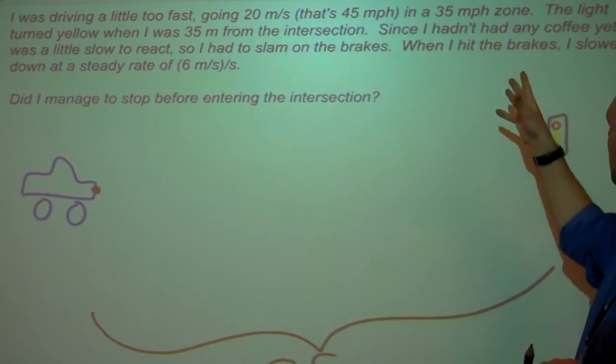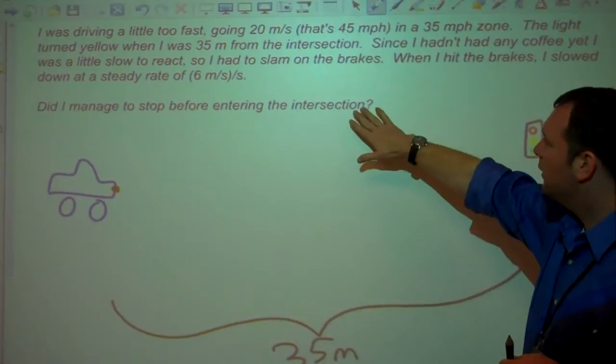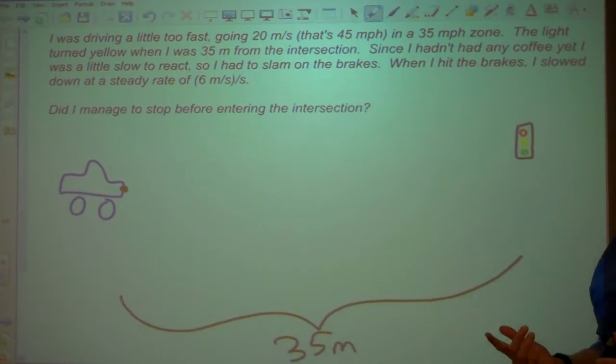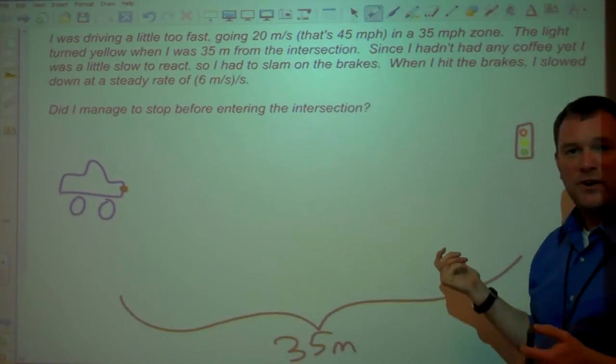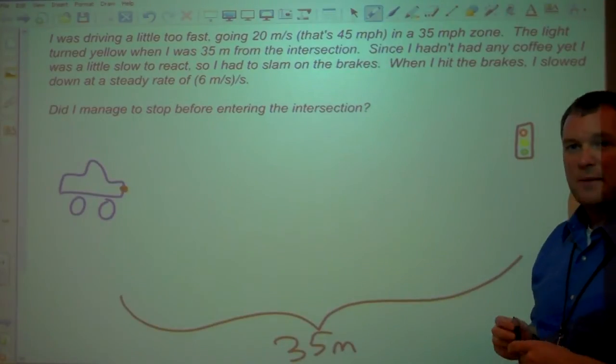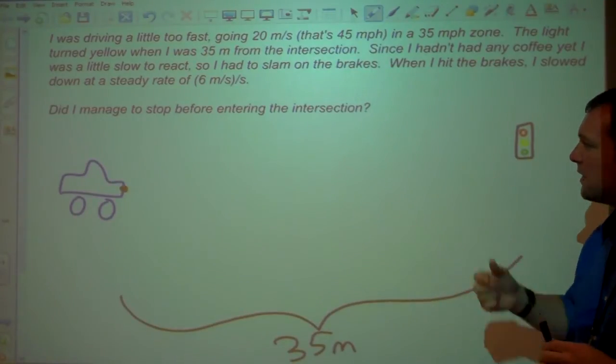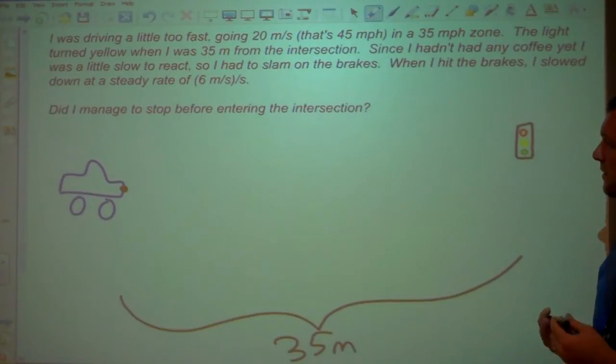And I also know then that it's 35 meters from the starting point of my car to that intersection. I think what I'm going to be trying to do then, do I manage to stop before entering the intersection? I'm going to figure out how far does my car travel and then compare it with 35 meters. Hopefully I'll travel a distance less than 35 meters by the time I come to a stop.